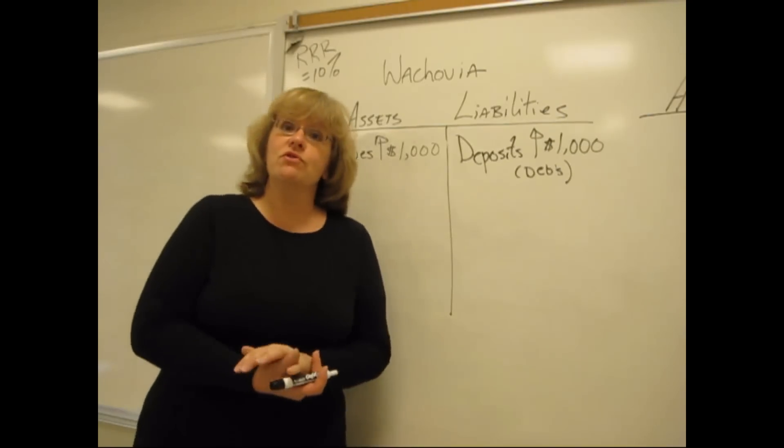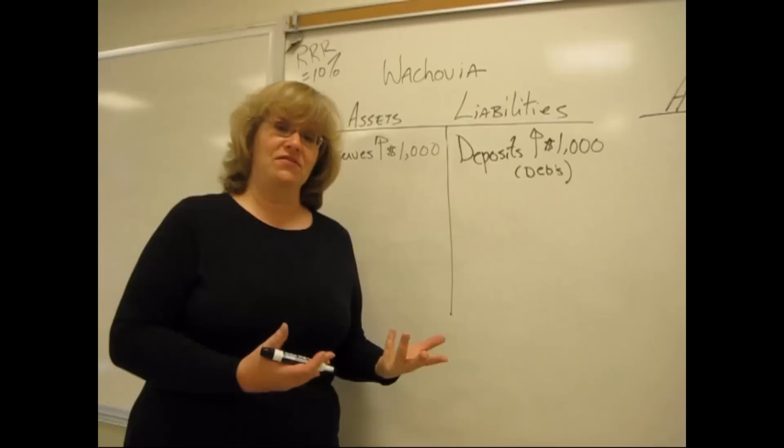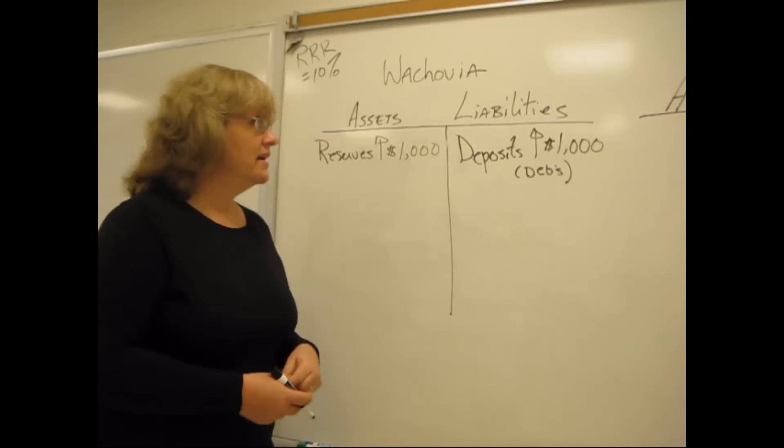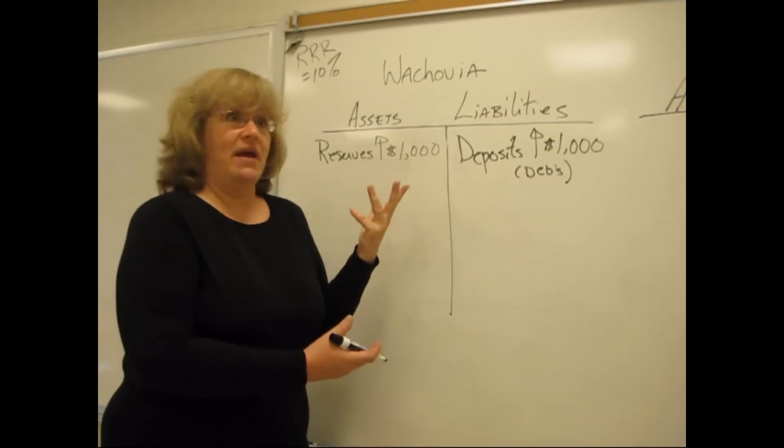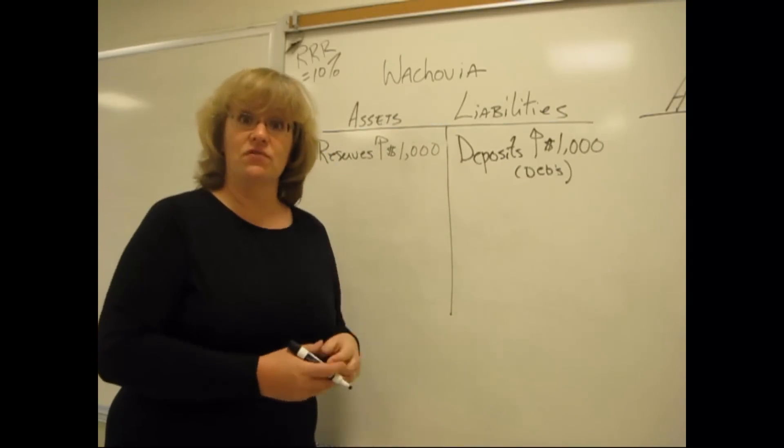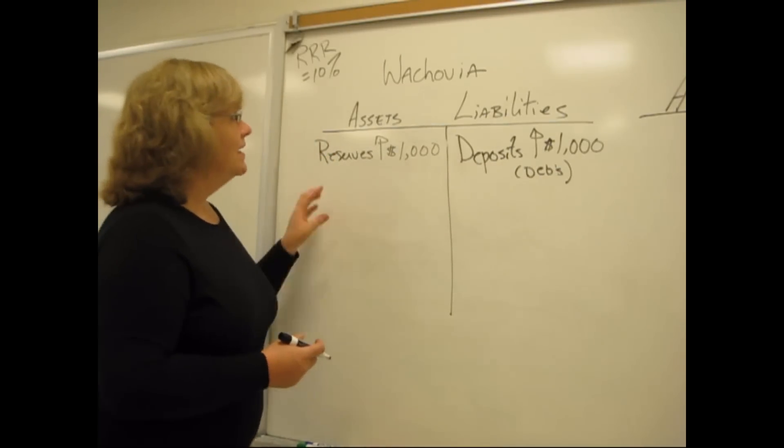Now, because the required reserve ratio is 10%, we know that Wachovia doesn't actually have to keep all of this in the vault. And although reserves earn a tiny bit of interest, it's not a lot. And so this is the bank. Their aim is to make money, profits for themselves, and so they're going to lend it out.